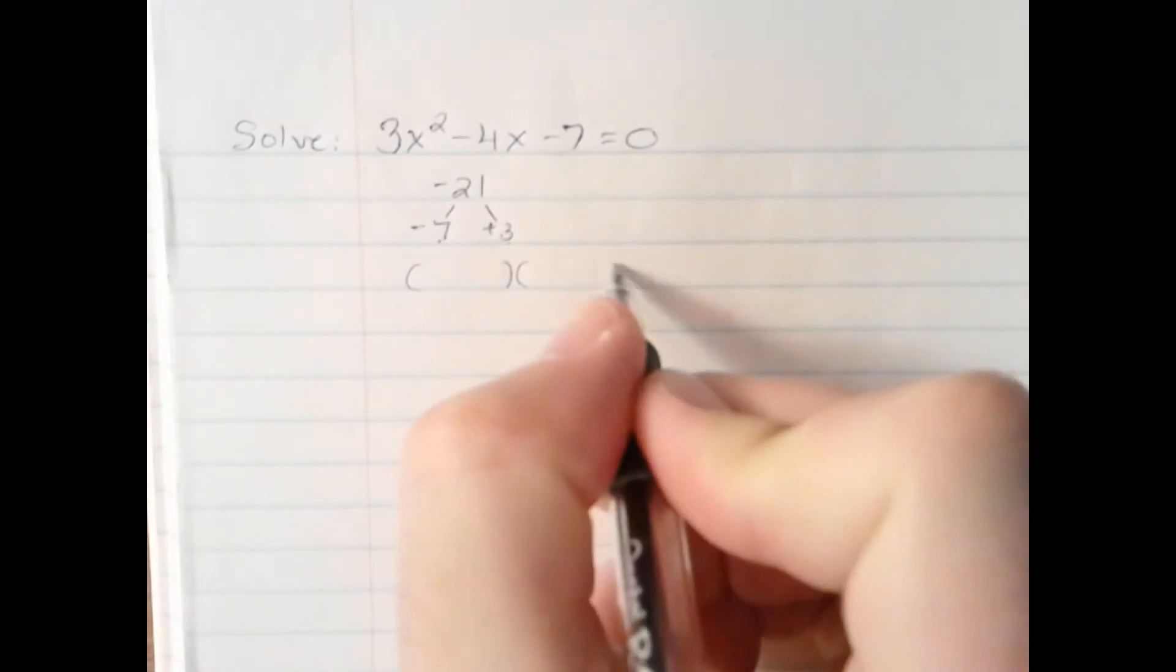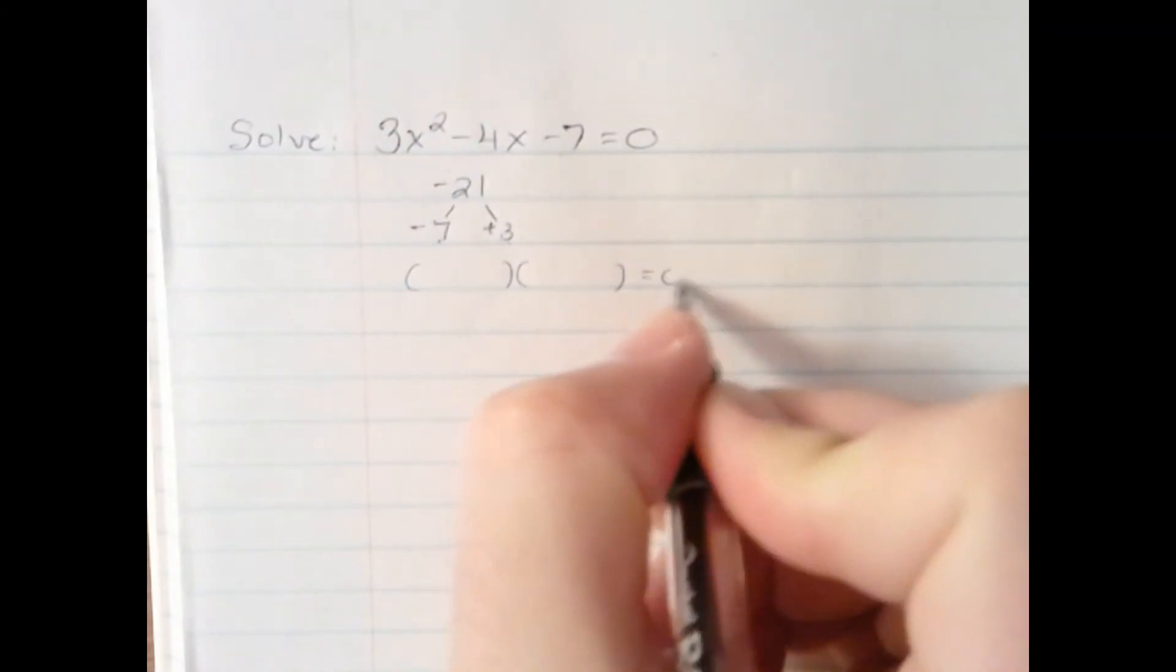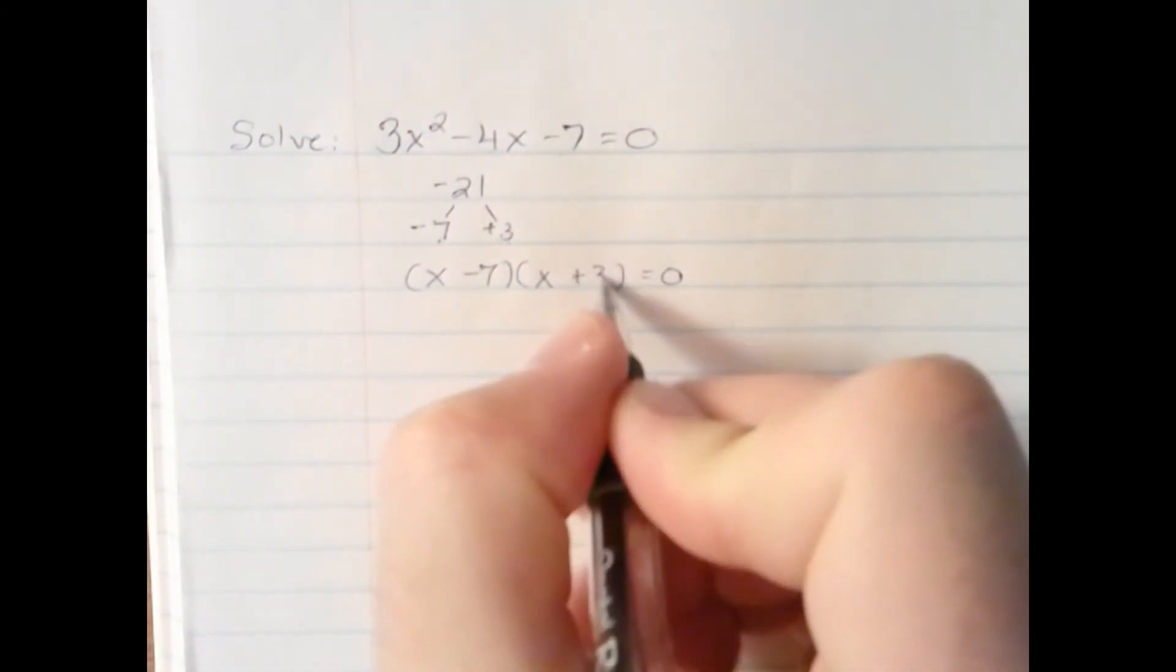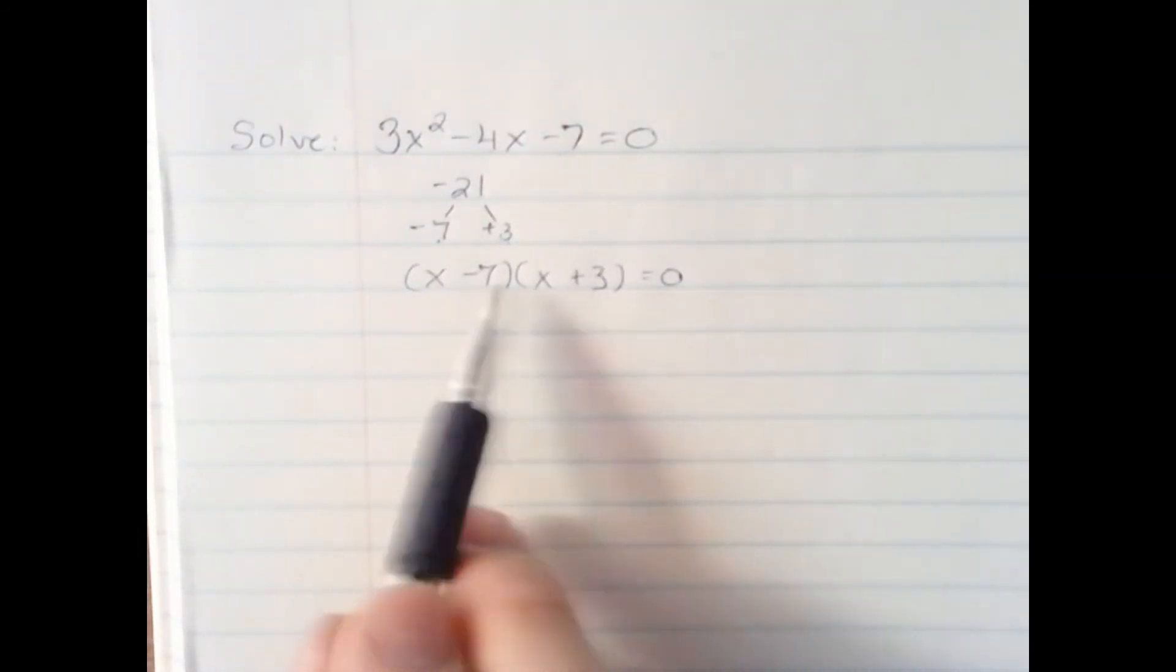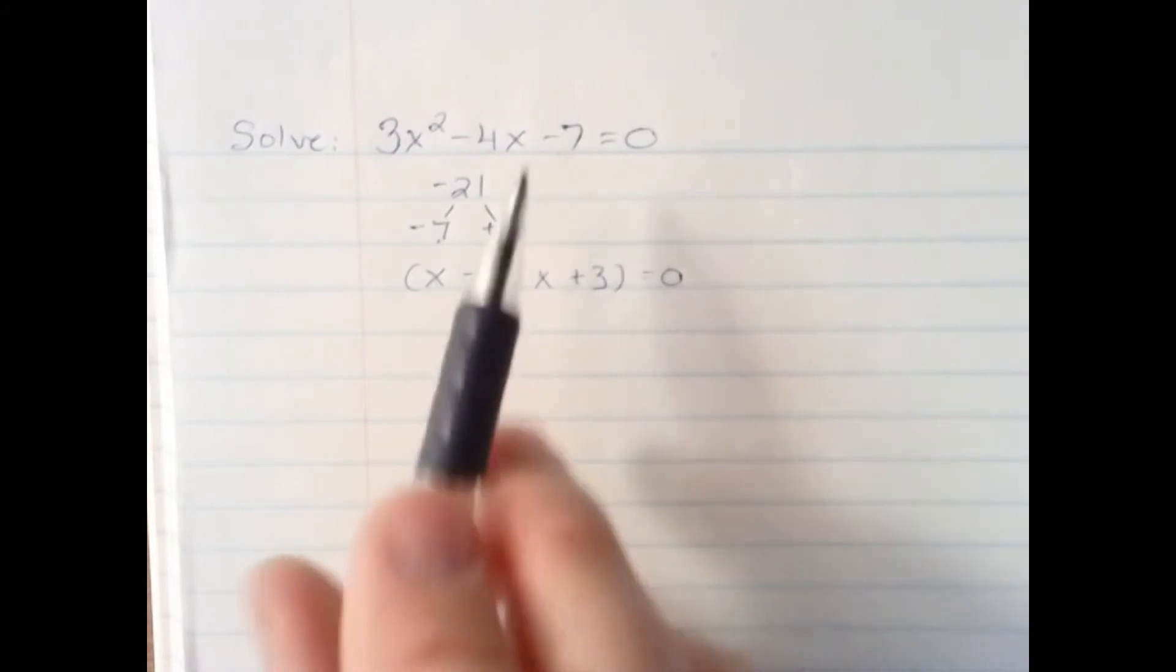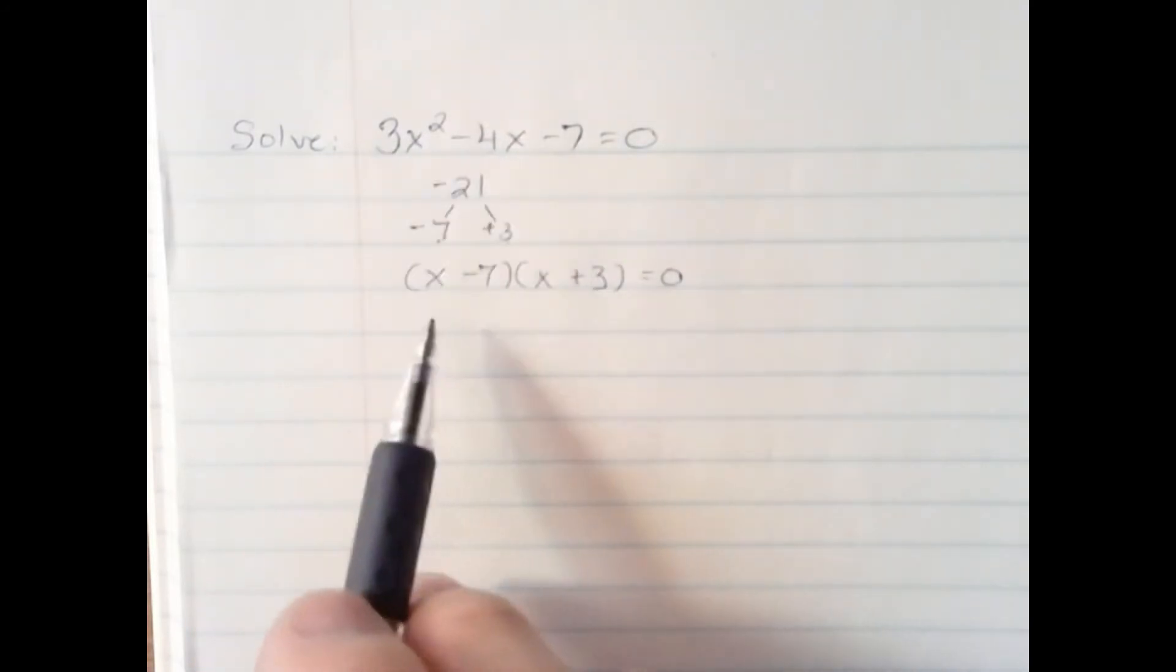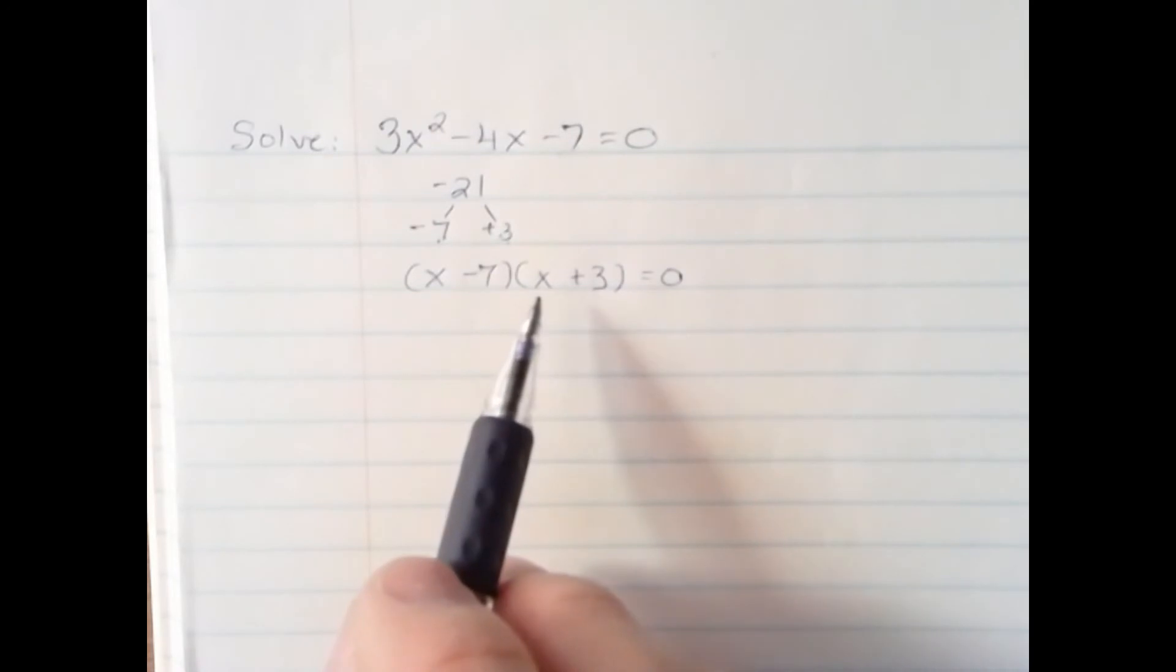Now, this is not the final factorization. This is the setup, x minus 7, x plus 3. You can see, if we were to foil this out, we would not have the original trinomial. So we know that this is not the finished factorization.